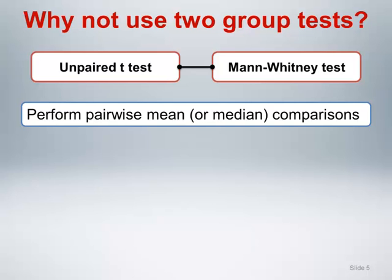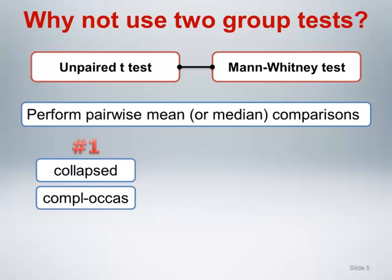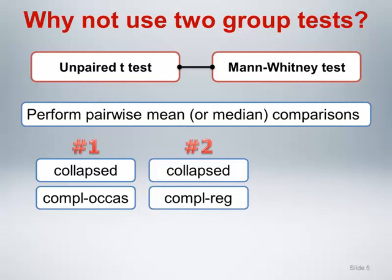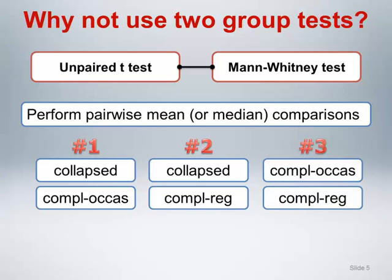Before going any further, let's address the obvious question first. Why not use the unpaired t-test or the Mann-Whitney test and simply perform pairwise mean or median comparisons for the three groups? This would involve three pairwise comparisons: comparing the collapsed group with the completed occasional runner group, comparing the collapsed group with the completed regular runner group, and comparing the completed occasional runner group with the completed regular runner group.